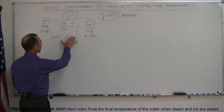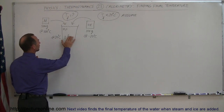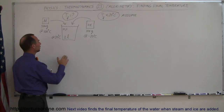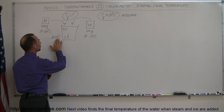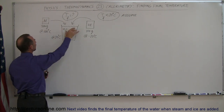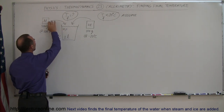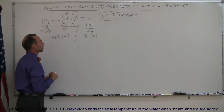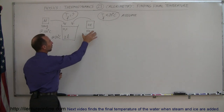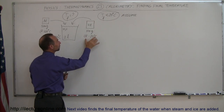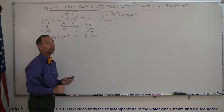What we have here is a bucket of water, two liters of it, which is 2,000 grams of water, starting at 20 degrees centigrade. We dump into that bucket of water an aluminum block, 500 grams of it, at 100 degrees centigrade, and a block of ice, 100 grams of it, at minus 20 degrees centigrade.